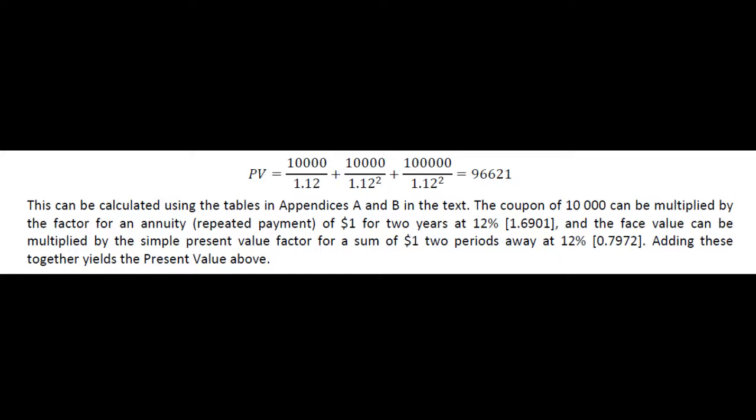Once you have done that, there are present value tables, financial calculators if you're at home, and obviously spreadsheets. What you're going to end up with is the whole next set of information. All this section is just talking about the present value calculation, so if you're comfortable with how we've got the cash flows, what we end up with is $96,621.